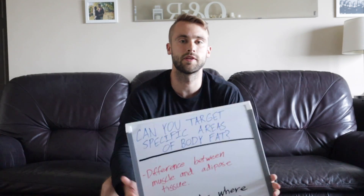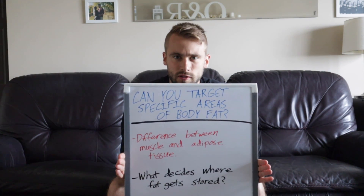So what decides where fat gets stored on your body? There are two main things: genetics and hormones. A simple example is the difference between males and females — they have different genetics and different hormones, causing them to store body fat in different areas. Guys most often store it in the gut and love handles, while girls most often store it in the arms and thighs.